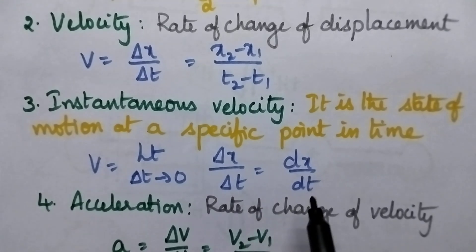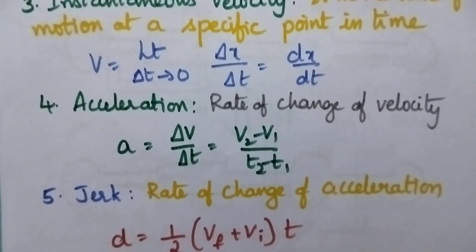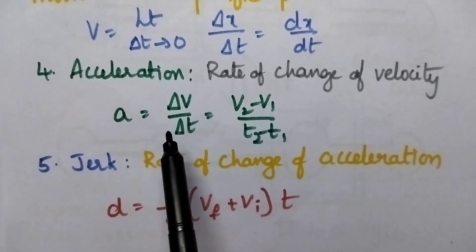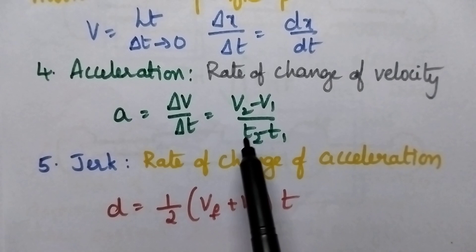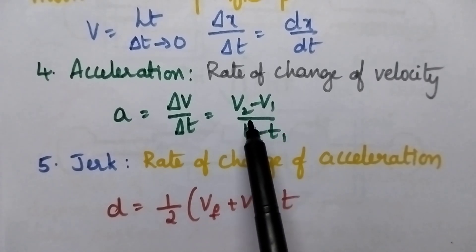Coming to the acceleration, acceleration is nothing but rate of change of velocity. So, a is equal to delta v by delta t and that is equal to v2 minus v1 by t2 minus t1. v1 is the initial velocity, v2 is the final velocity.